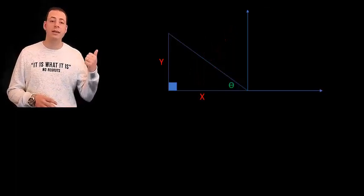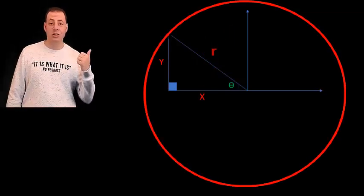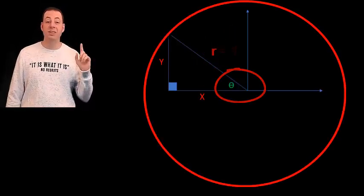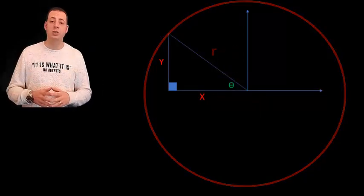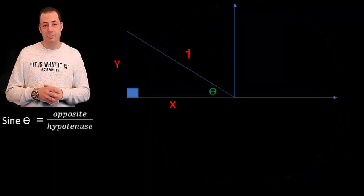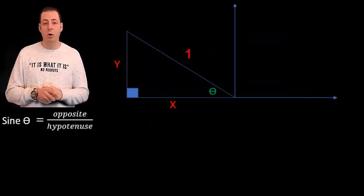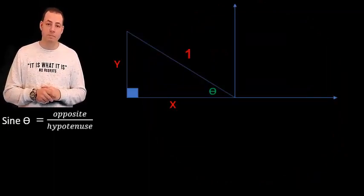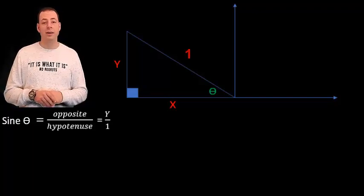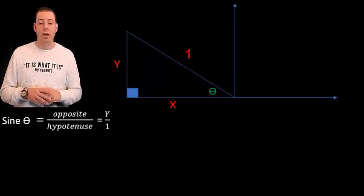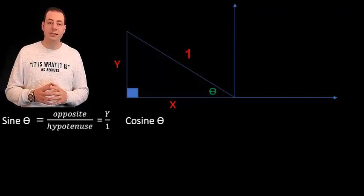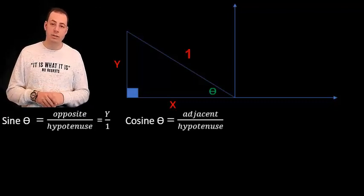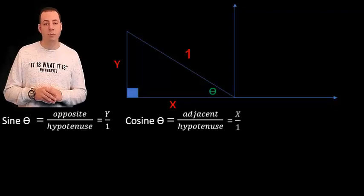We draw this triangle inside a circle with center of angle theta and with radius equals to 1. So the trigonometric functions are sine theta which is the opposite over hypotenuse which is y over 1. Cosine theta equals to adjacent over hypotenuse or x over 1.